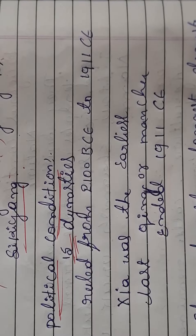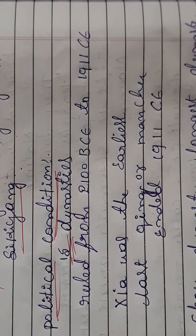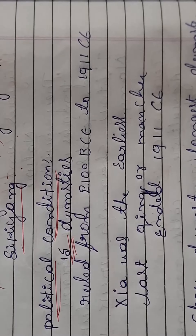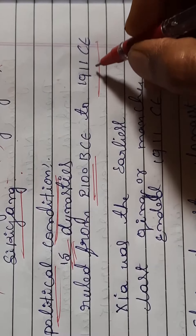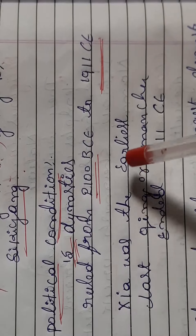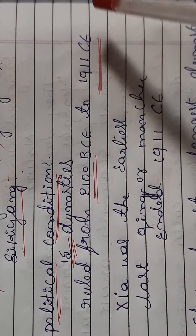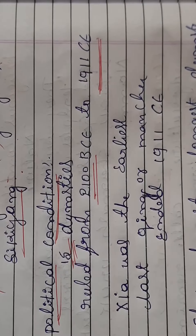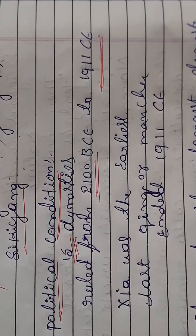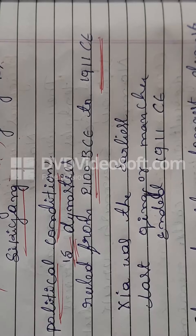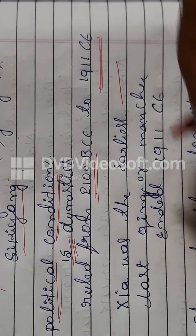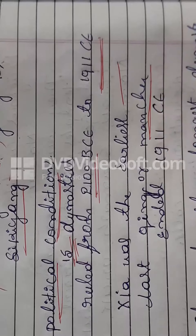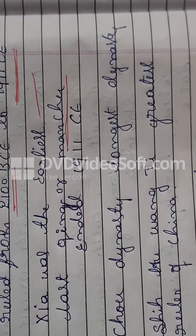China was ruled from 2000 BCE to 1911 CE. What are the main dynasties that ruled? The Xia was the earliest, the first dynasty. And the Manchu dynasty was the last dynasty of Chinese civilization.